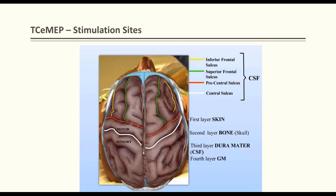For stimulation electrode placement: the motor cortex is anterior and the sensory cortex posterior, separated by less than half a centimeter. Electrodes should not be placed too far apart — the motor and sensory cortex are very close together. Accurate head measurement is critical. For SSEPs, an incorrect placement may give a small inverted signal, but for MEP, if you miss the motor gyrus you will fail to activate it without very high stimulation — causing excessive patient movement.